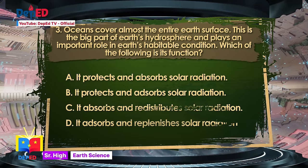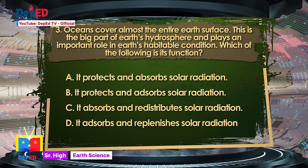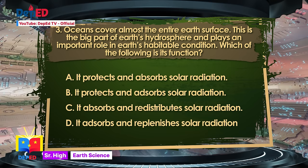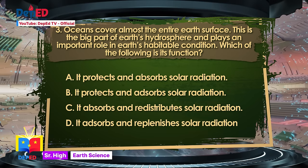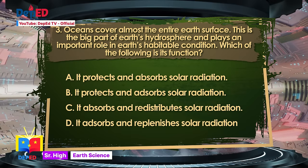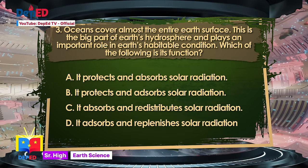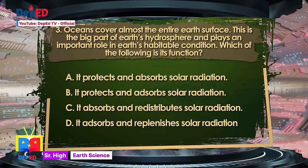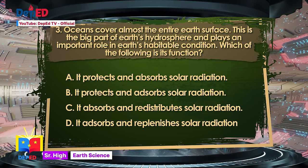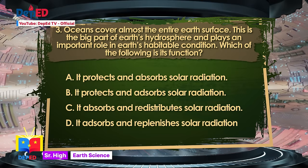Number 3. Oceans cover almost the entire earth's surface. This is the big part of the earth's hydrosphere and plays an important role in Earth's habitable condition. Which of the following is its function? A. It protects and absorbs solar radiation. B. It protects and absorbs solar radiation. C. It absorbs and redistributes solar radiation. D. It absorbs and replenishes solar radiation.